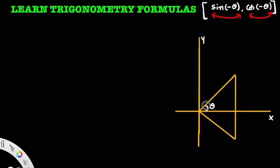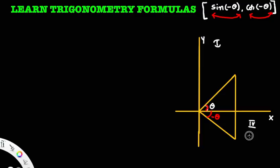Observe this diagram. Theta is in the first quadrant. Minus theta lies in which quadrant? Minus theta lies in the fourth quadrant. We know the 'All Silver Tea Cups' formula: in the first quadrant, all trigonometric functions are positive. In the fourth quadrant, cos and secant are positive.